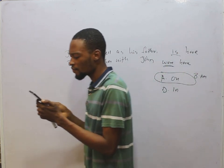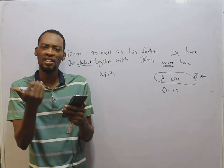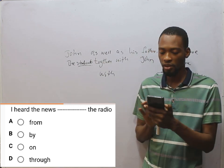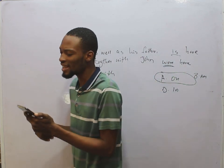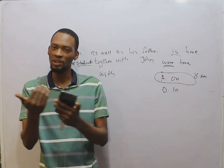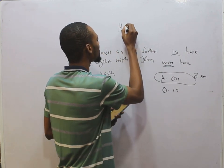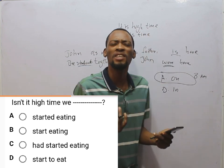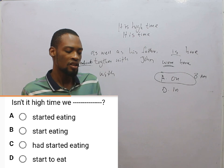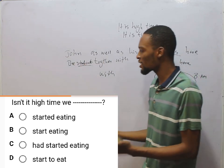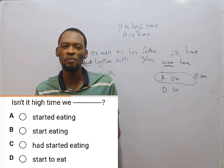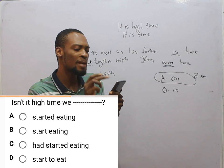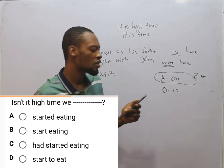I have the news dash the radio — the correct answer is on the radio. Then, is it high time with dash? Anytime you see it is high time or it is time, the verb that follows should be in past tense. If you say it is high time we go — that is wrong. It should be it is high time we went. Applying this rule: isn't it high time we started eating is correct.